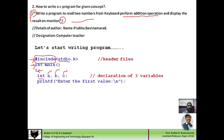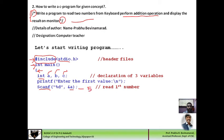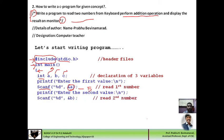Next, I write a printf statement to ask the user to enter the first value. When the user enters the first value from the keyboard, it is stored in variable A using the scanf statement. The scanf instruction reads data from the keyboard. Suppose I enter 5 — then 5 will be stored in variable A, so the content of A becomes 5. Similarly, I write a statement to read the second number, which is stored in variable B. If I enter 7, then 7 will be stored in B, so the content of B becomes 7.